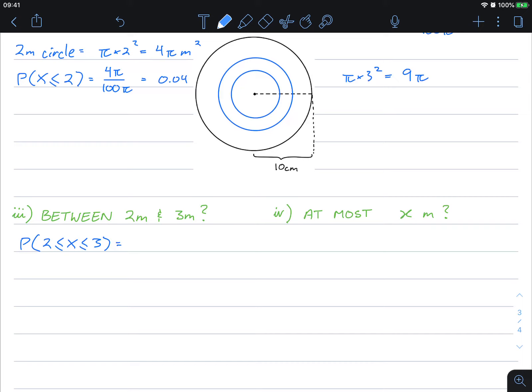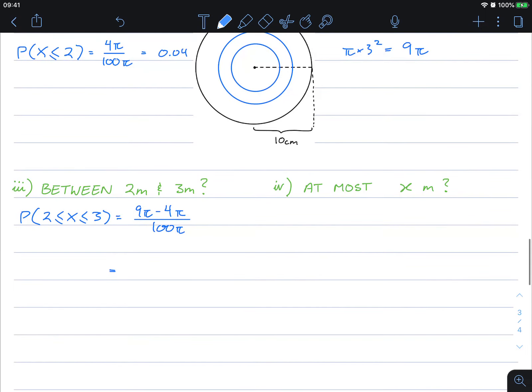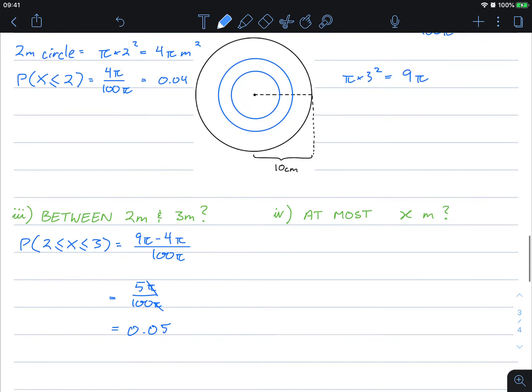So the probability of 2 is less than or equal to x less than or equal to 3 is equal to 9π minus 4π, all over 100π. That's 5π over 100π, which is 0.05. It's a 5% chance.